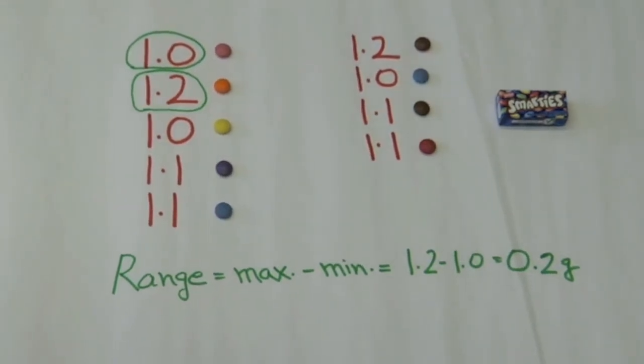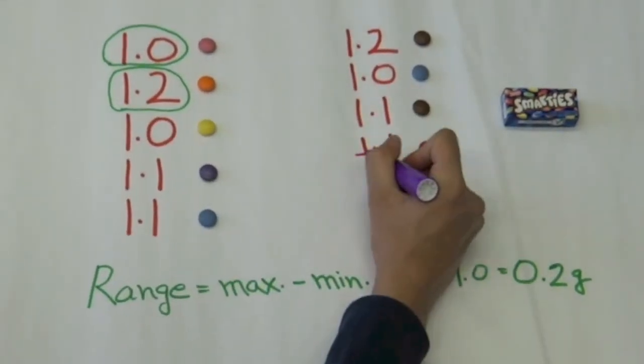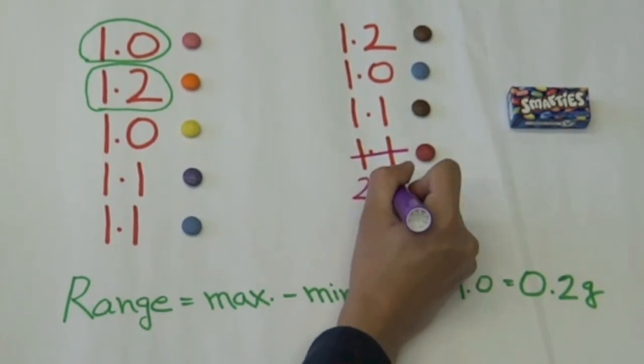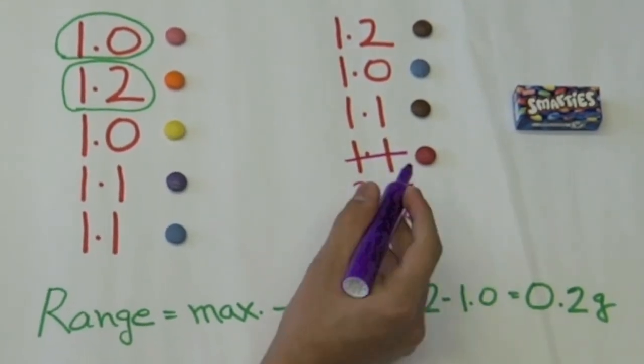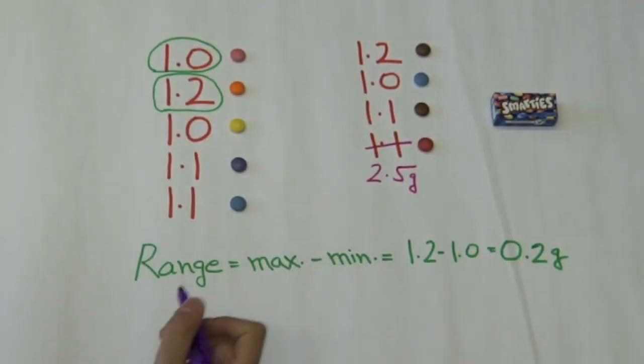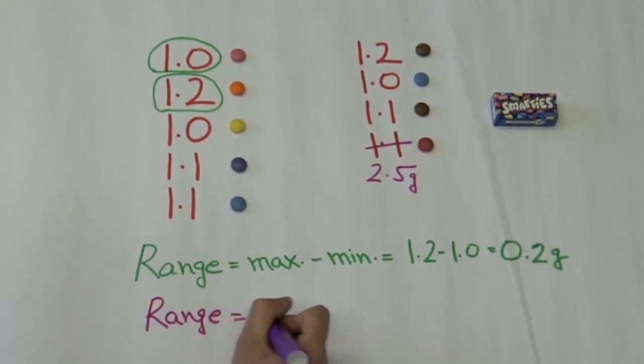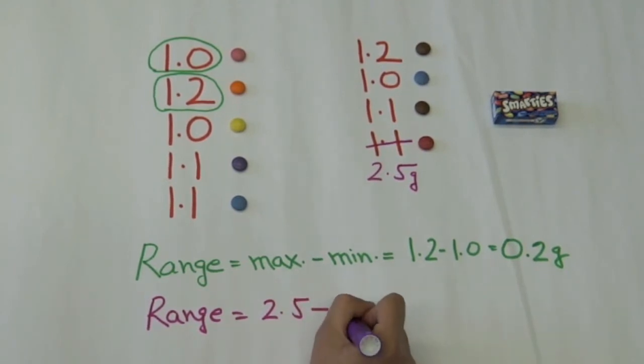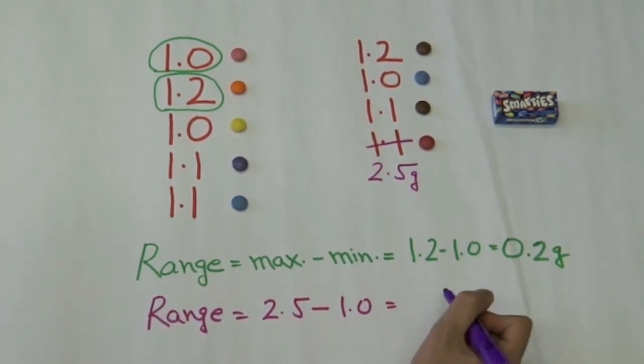Now say my one smarty here weighed 2.5 grams instead of 1.1 grams. In that case my range will change to 2.5 minus 1.0, which gives me 1.5.